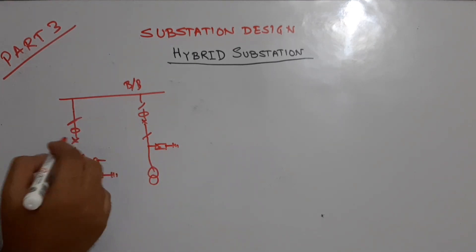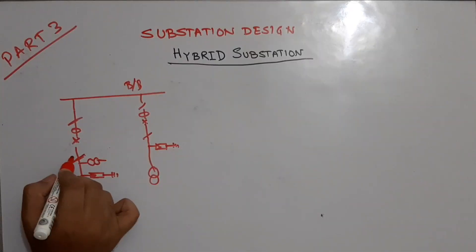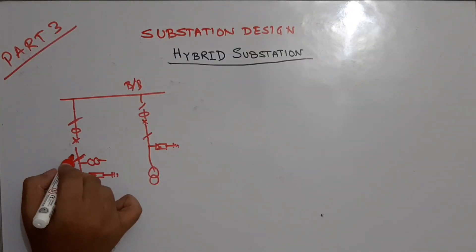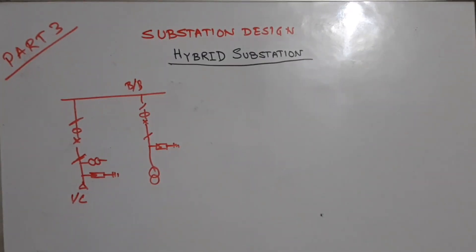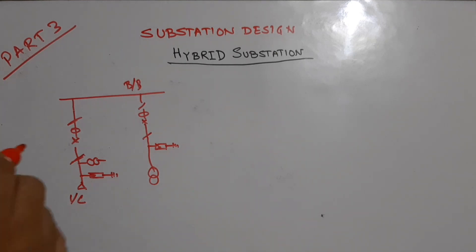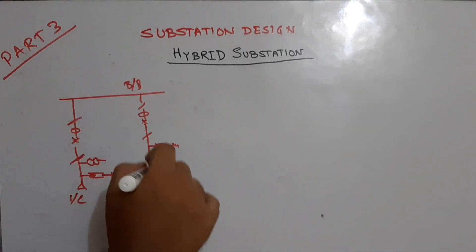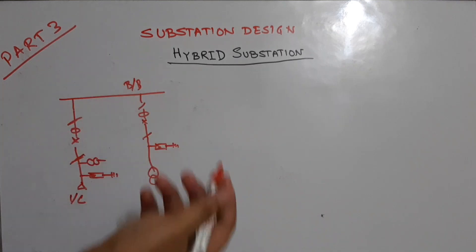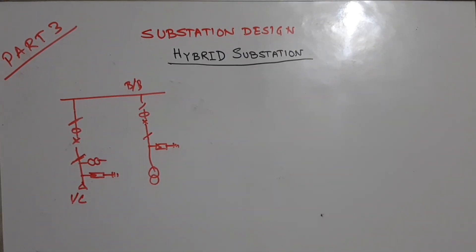I am not drawing the AR switch here — there will be an AR switch as well. When I make a separate dedicated video on each substation type, I will draw the AR switch portion properly. So this is a typical single line diagram of the substation.